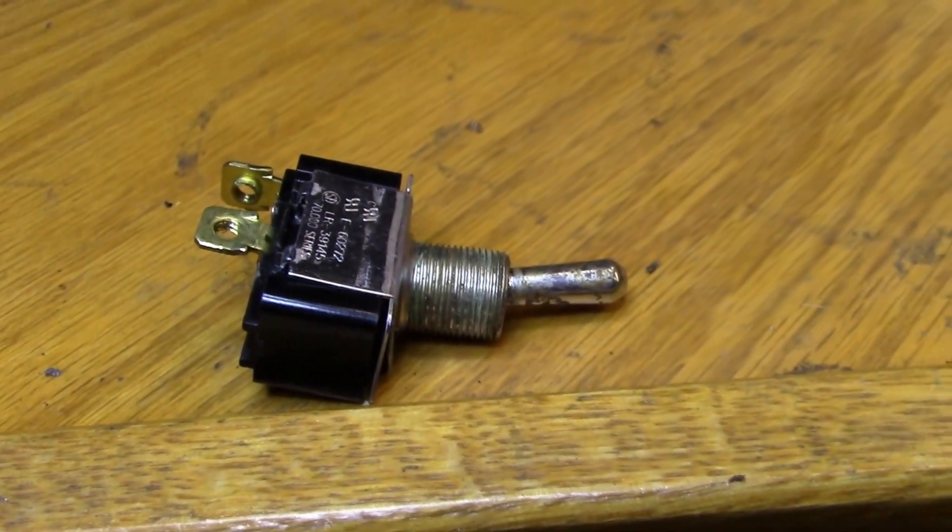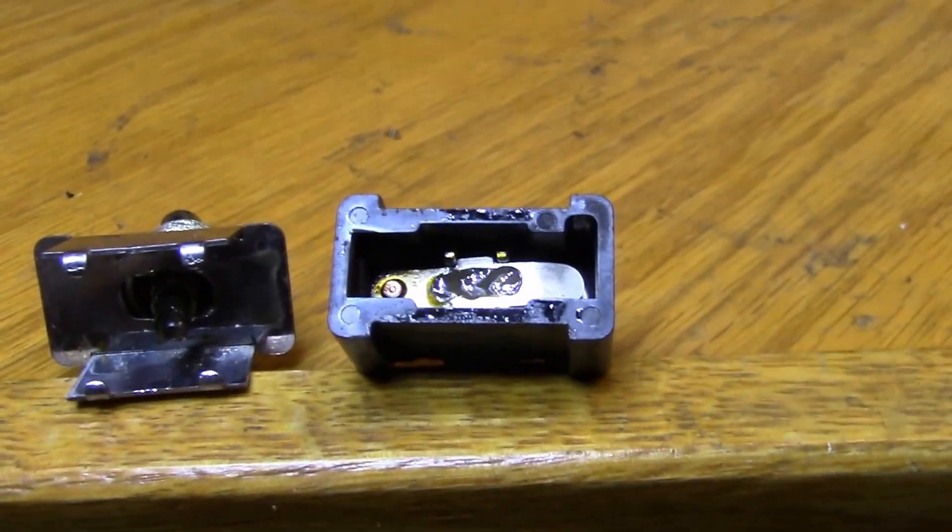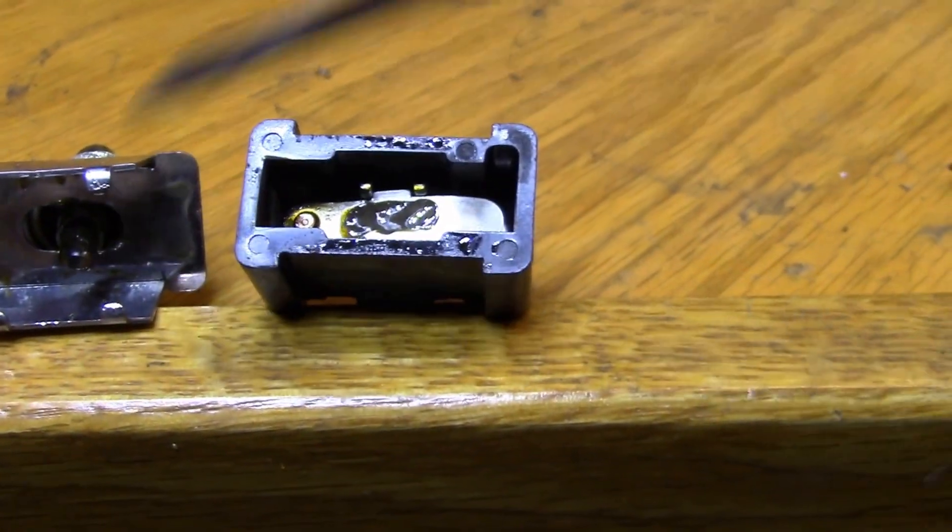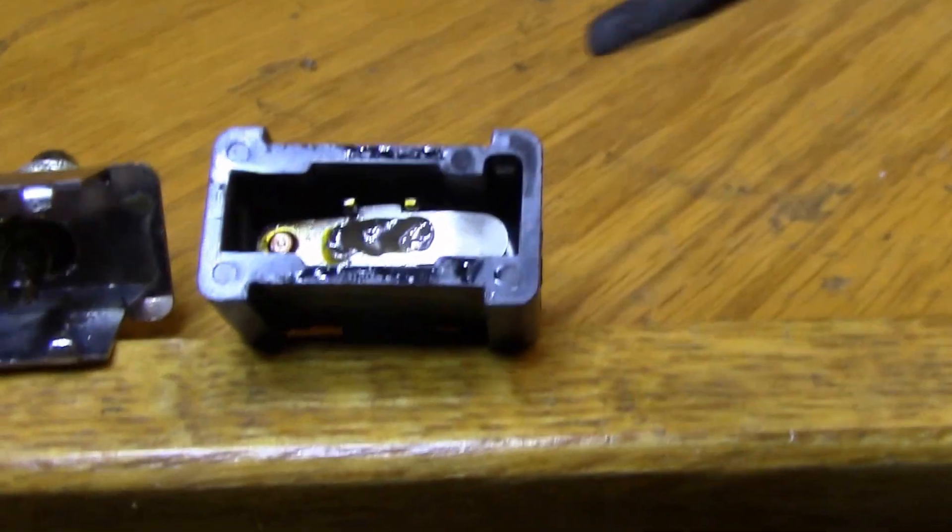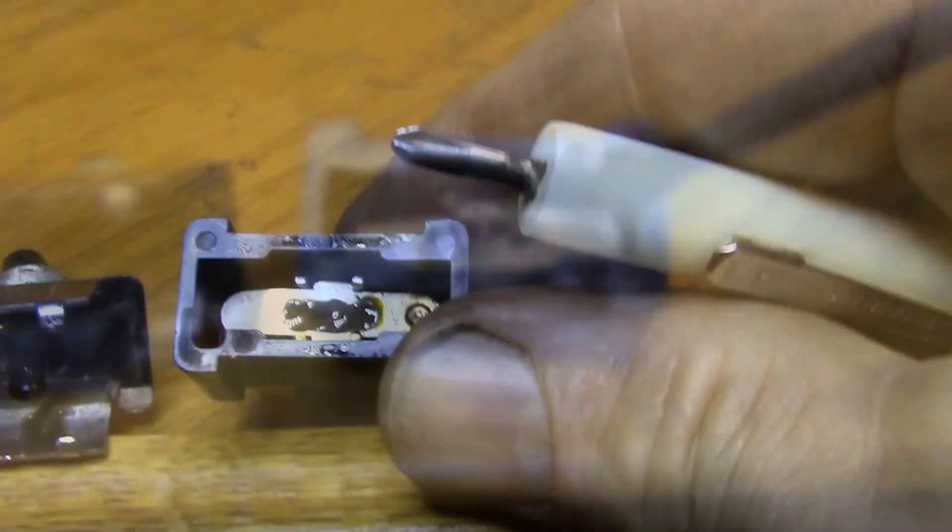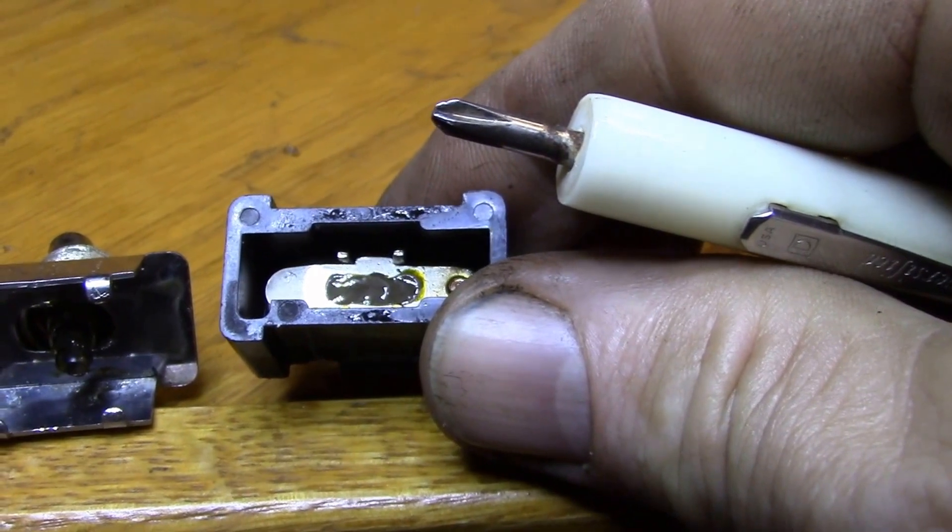Let's take a look. The inside is pretty clean. That just seems like the grease that was probably originally put in there, and it looks like the contacts are just welded together. They're stuck down, they don't want to spring back. Maybe I'll try to pop those apart if I can.